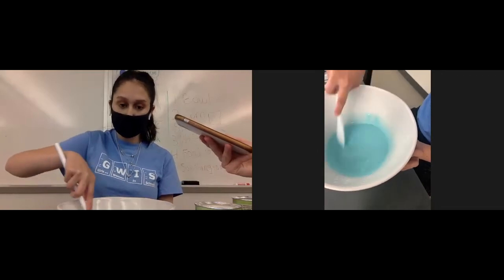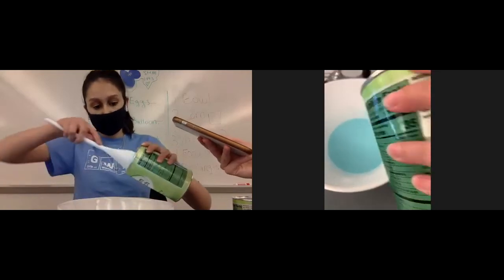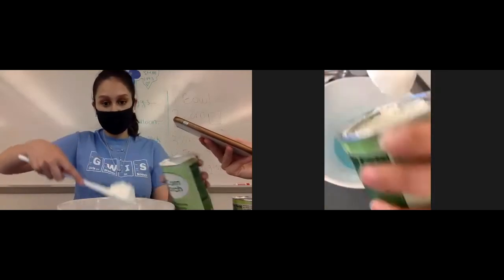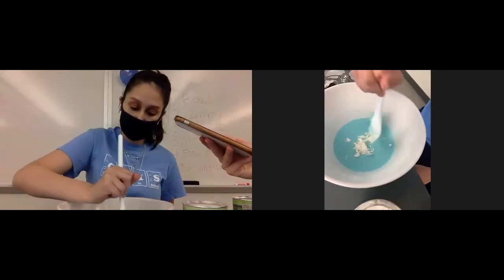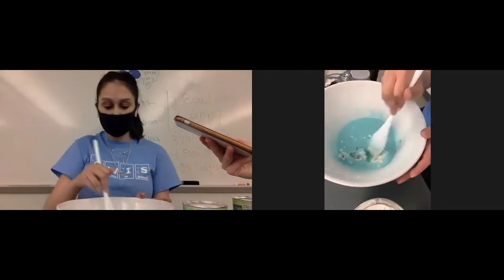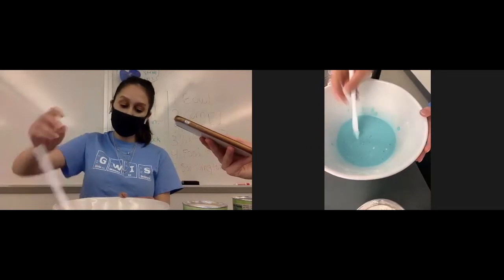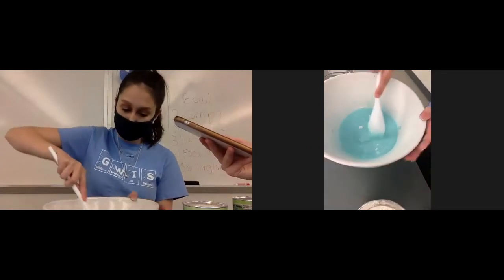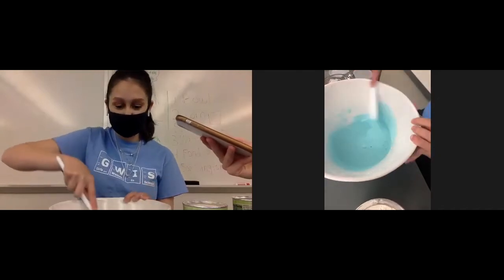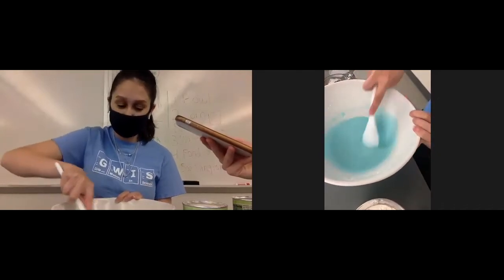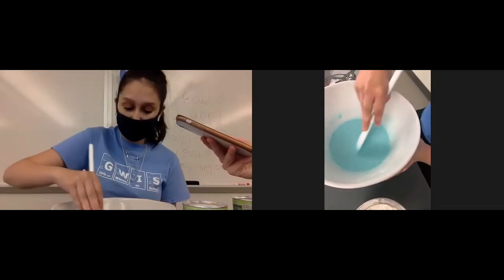Is the color of the water changing as you add the cornstarch? If so, write that down in your lab notebook or you can say it out loud. It was like really transparent and now it's really not. Yeah, totally. Probably because cornstarch is opaque. Definitely big words, wow.